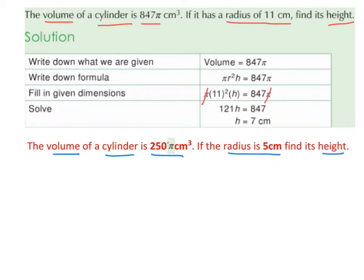Again we write down what we're given, so the volume is equal to 250π. The formula for the volume of a cylinder is πr²h, and that's equal to 250π.